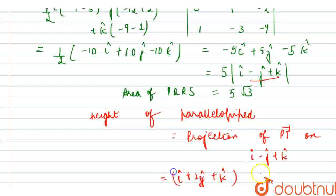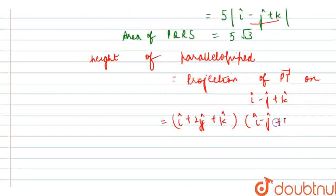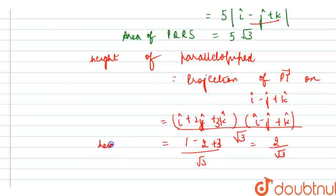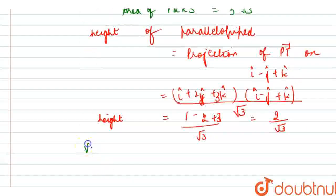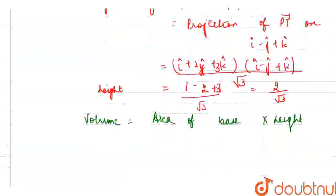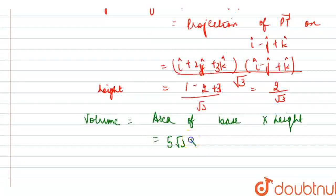The projection of PT onto i-cap minus j-cap plus k-cap, with the magnitude in the denominator, which is root 3. Calculating: 1 minus 2 plus 3 upon root 3 — there was a small error; it was 3k-cap — so we get 2 upon root 3. This is the height. So the volume is area of base times height: 5√3 times 2/√3. The root 3 cancels, so we are left with 10 units. The volume of the parallelepiped is 10.